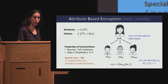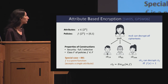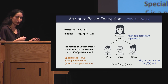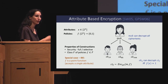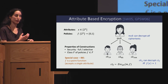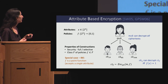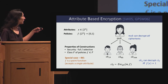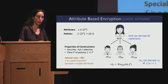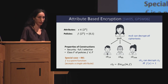A special case important for this talk is the notion of IBE. It was actually defined before ABE, but ABE is a generalization. I like to think of IBE as a special case of ABE where the supported policies are only point functions — every ciphertext is targeted to only a single attribute.